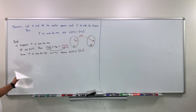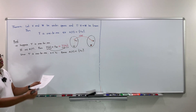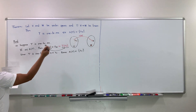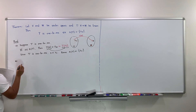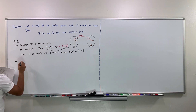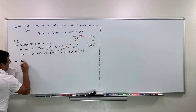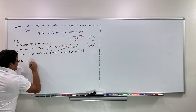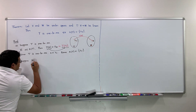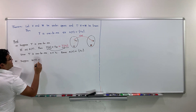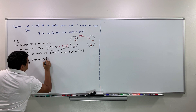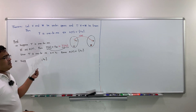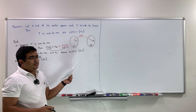We have proved one direction. Now we will prove the opposite direction. Suppose the null space of T is the zero vector, and we want to prove that the linear transformation T is one-to-one.